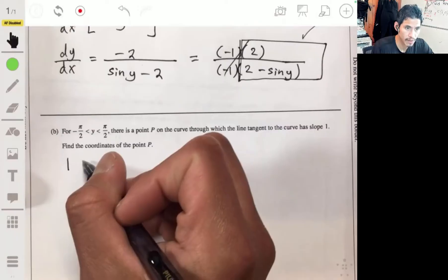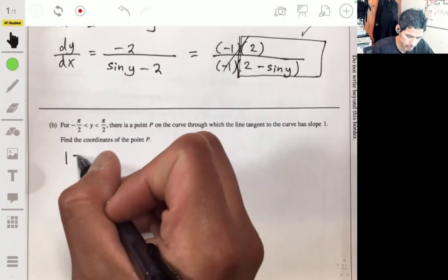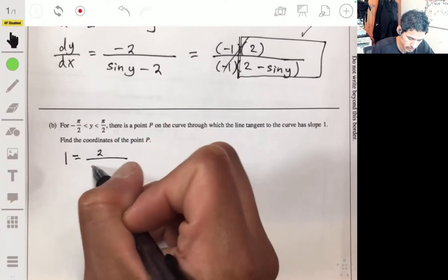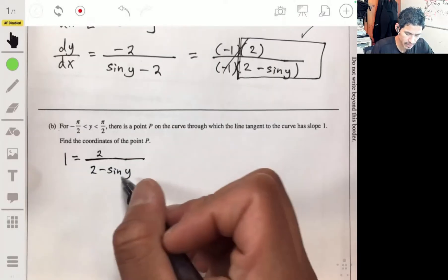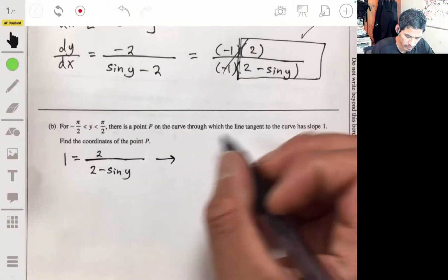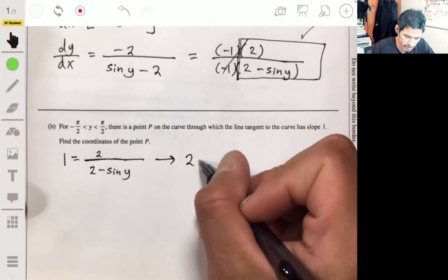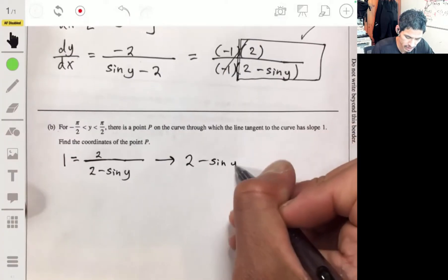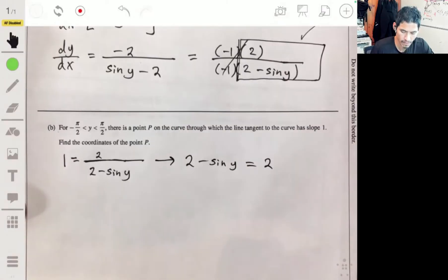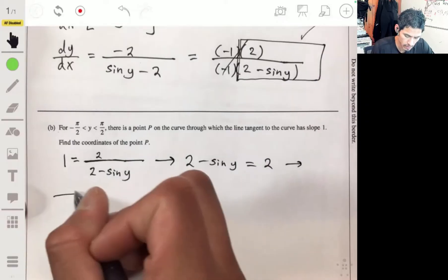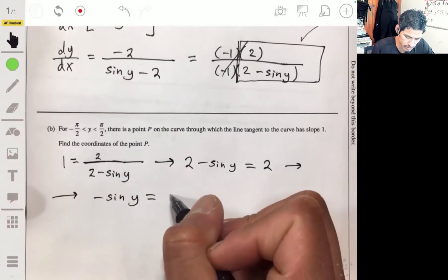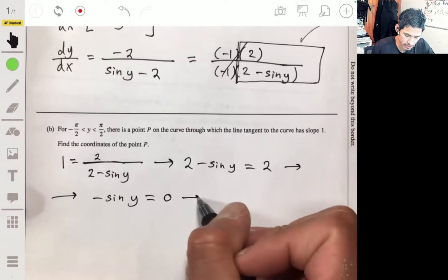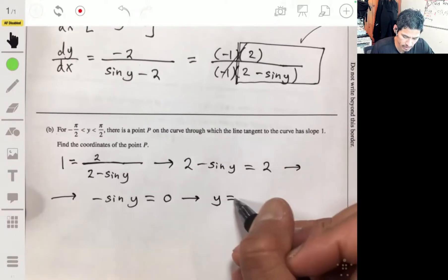So we're going to get one equals two over two minus the sine of y. Multiplying out the denominator, we get two minus the sine of y is equal to two. Take away two. Negative sine of y is equal to zero. And that means y will then have to be zero as well.